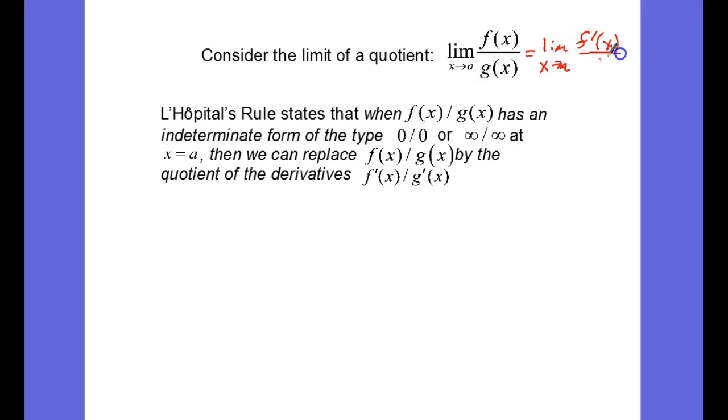Take a minute and let this sink in. Realize that we are not doing the quotient rule. This is not, even though this is a ratio, even though this is a quotient, we're not differentiating the quotient. We're taking the derivative of what's on top and dividing it by the derivative of what's on the bottom. So it's actually a lot easier than the quotient rule. So this is really nice.